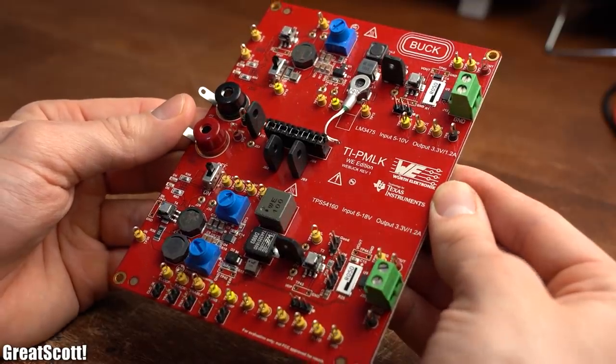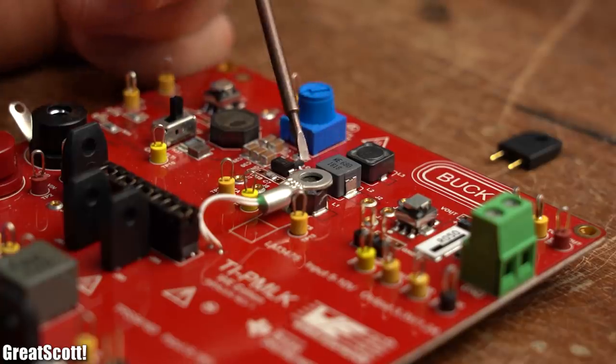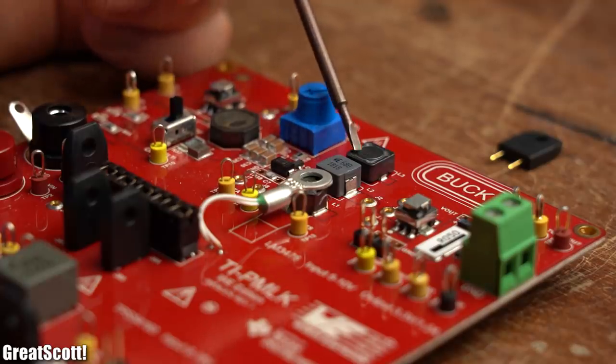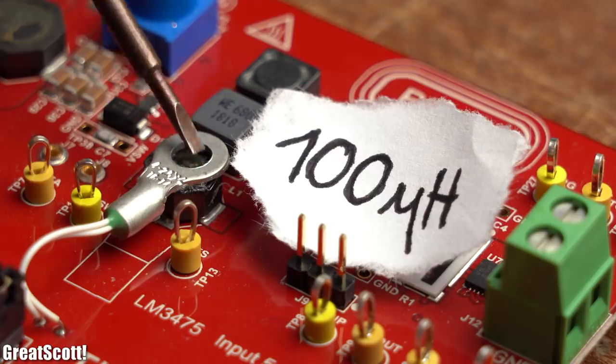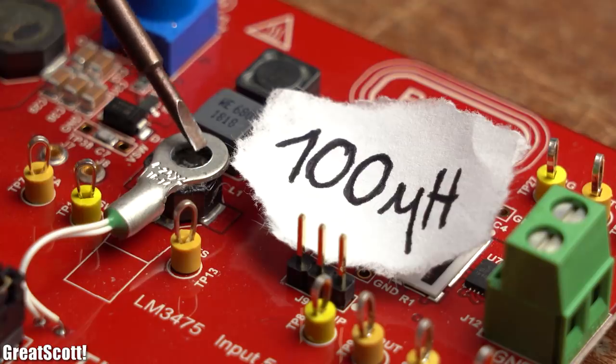But in order to learn more about how to properly select a coil, let's have a look at the learning kit board which uses three different coils for its first buck converter circuit. One of them features an inductance of 100 microhenry, and two of them an inductance of 68 microhenry.